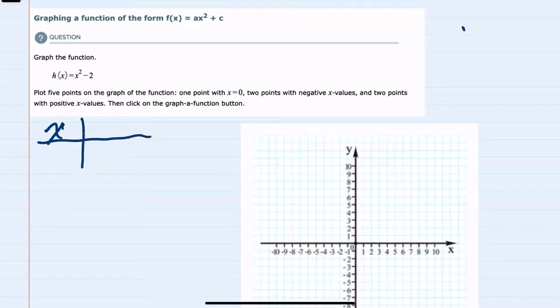So I'll use a table to create those five coordinates. We're told one should be when x equals 0, and we should use a couple of negative values - I'll use negative 1 and negative 2 - and a couple of positive values - I'll use positive 1 and positive 2. We can then plug in these x values to find the y values or h of x, and I'll start with 0.